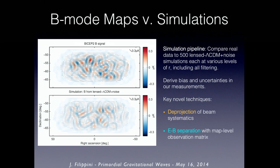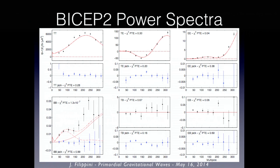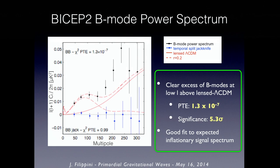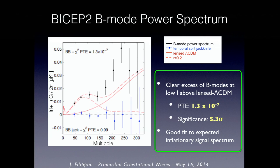Key novel techniques include a deprojection scheme for beam systematics, and very important work on efficiently separating E and B modes on a small sky map given a realistic instrument. The real data product is the power spectra: temperature, TE correlation, EE. The error bars are mostly sample variance — we have only one sky and one small patch. Jackknife maps are consistent with zero as expected. TB and EB are also consistent with zero. But in the lower left is something not consistent with zero: a substantial excess above the expected lensing foreground. The significance of that excess is about 5.3 sigma, and the shape is a good fit to the expected inflationary signal spectrum.